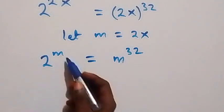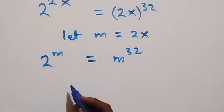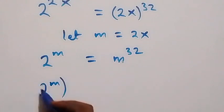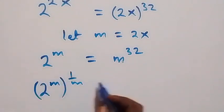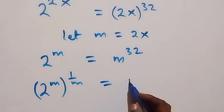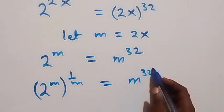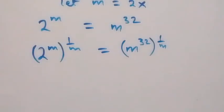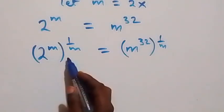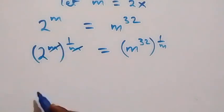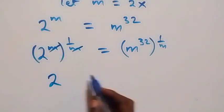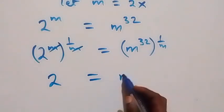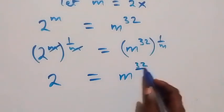In the next step, let's remove this power of m and raise both sides to 1 over m. So we have 2 raised to power m, raised to power 1 over m, equals to m raised to power 32, raised to power 1 over m. Following the law of indices, the powers multiply and cancel. We are left with 2 raised to power 1, which is 2, equals to m raised to power 32 over m.